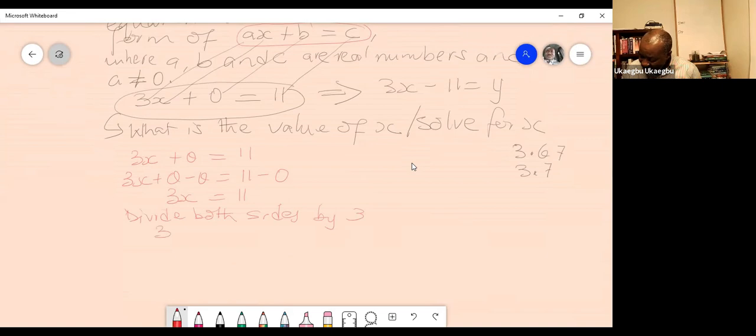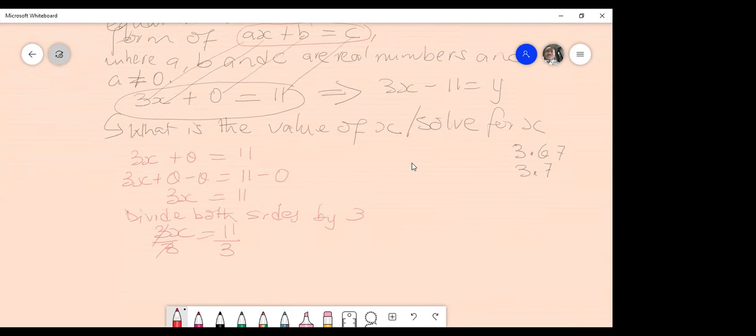So that gives us 3X over 3 equals to 11 over 3. And that gives us what? 11 divided by 3. Three point seven.